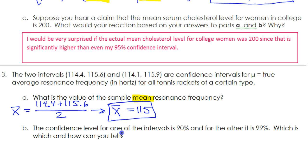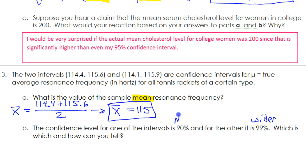The confidence level for one of the intervals is 90% and the other is 99% — which one is which? Remember, if you want more accuracy, you need a wider interval. If you make a wider interval, you can be more and more sure that the truth is in there somewhere. A lower confidence corresponds to a more narrow interval. The narrower the interval, the less confident you are that the truth is in there; the wider the interval, the more confident you can be. So whichever one is narrower will be the 90%, and whichever one is wider will be the 99%.